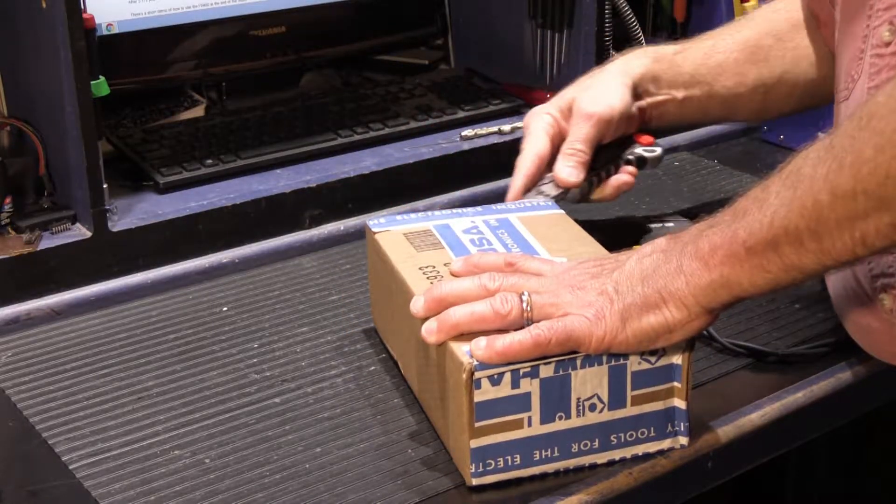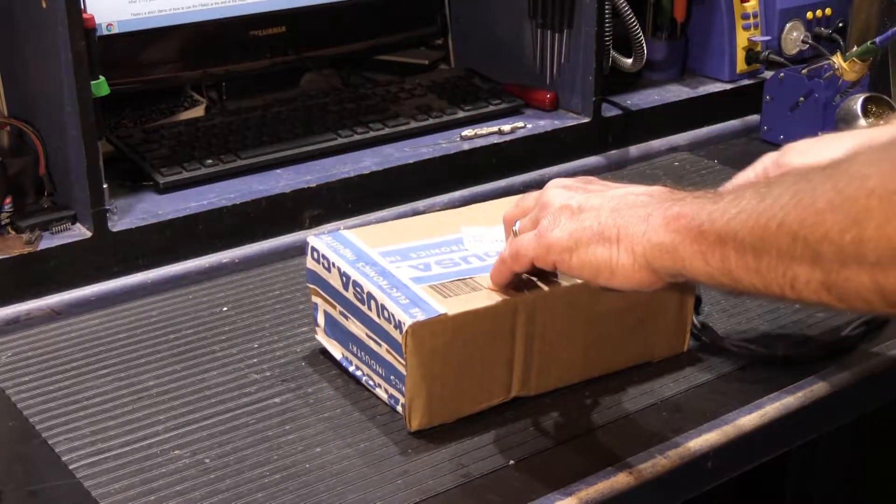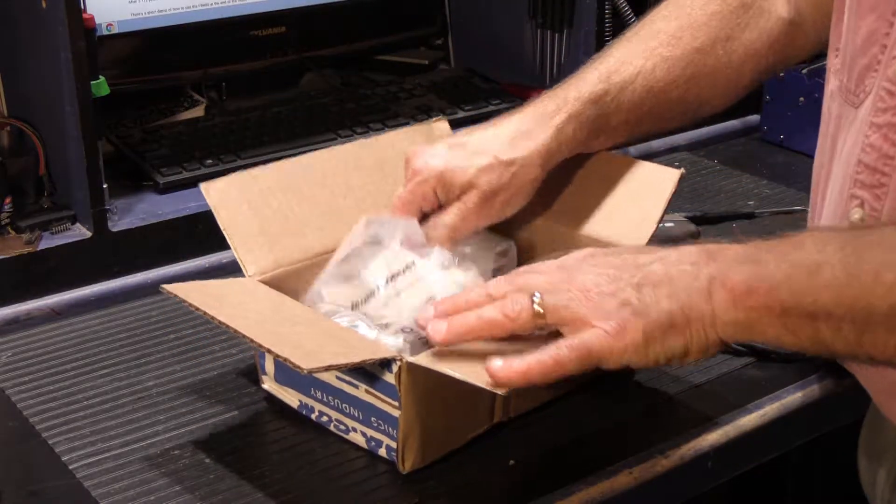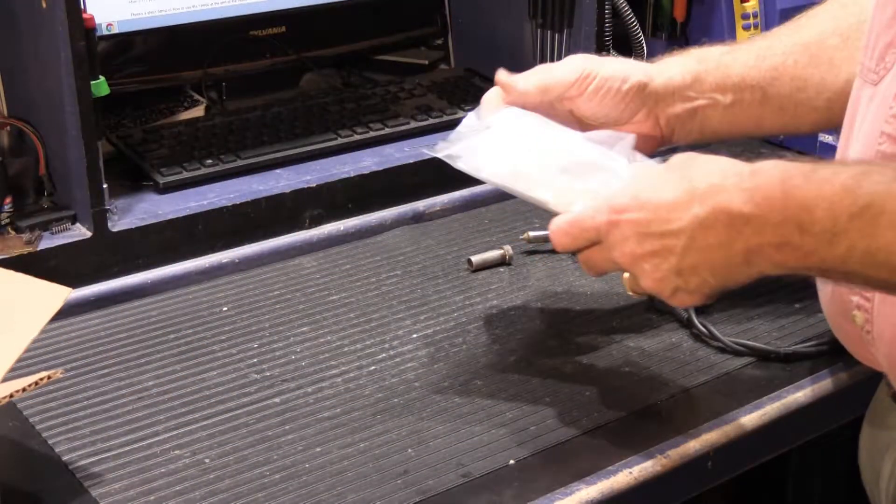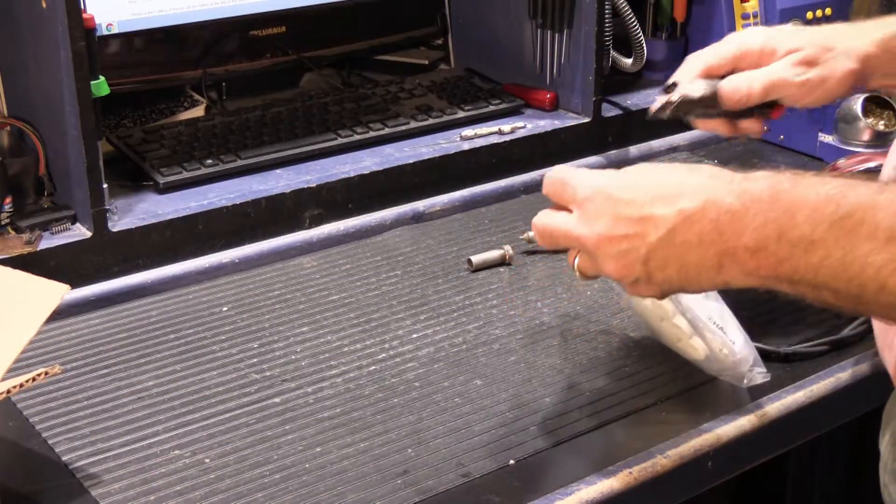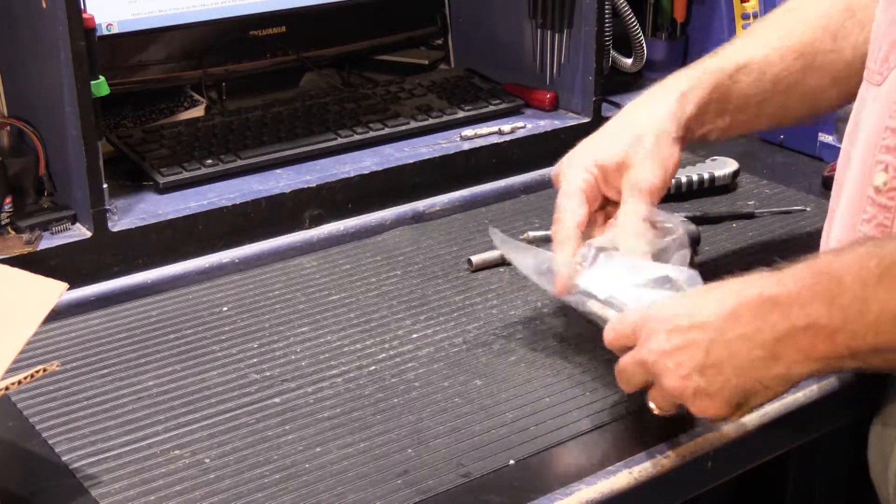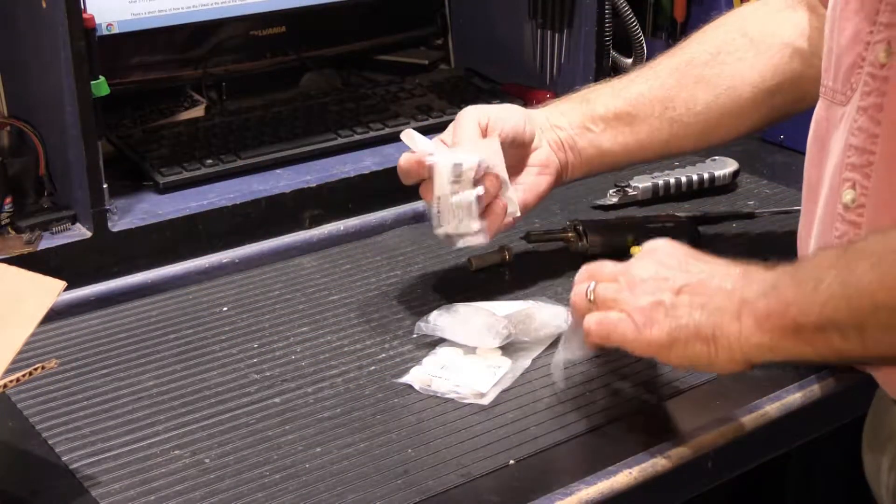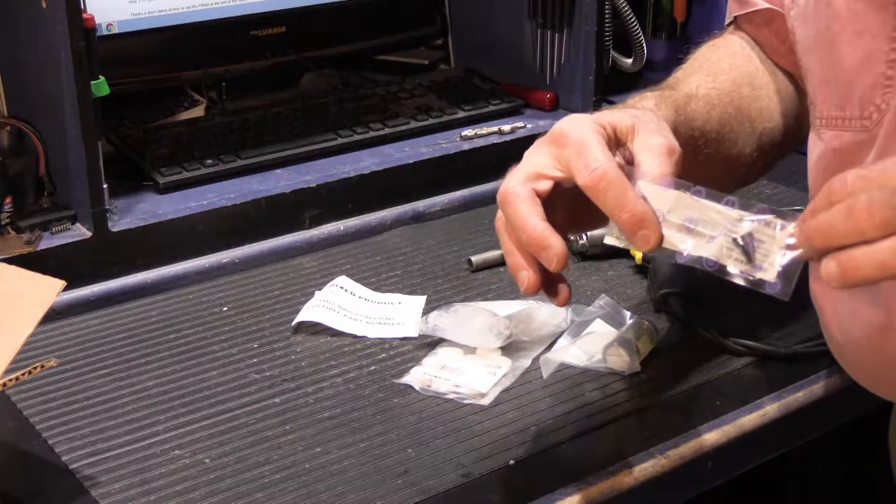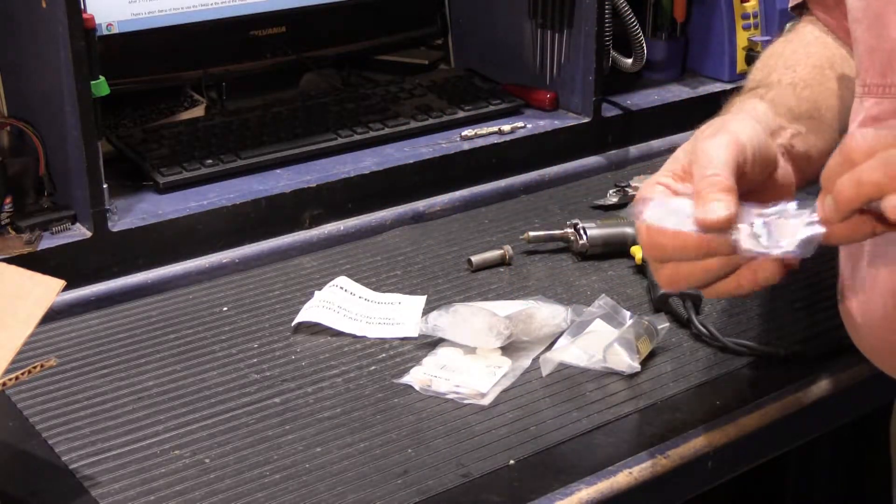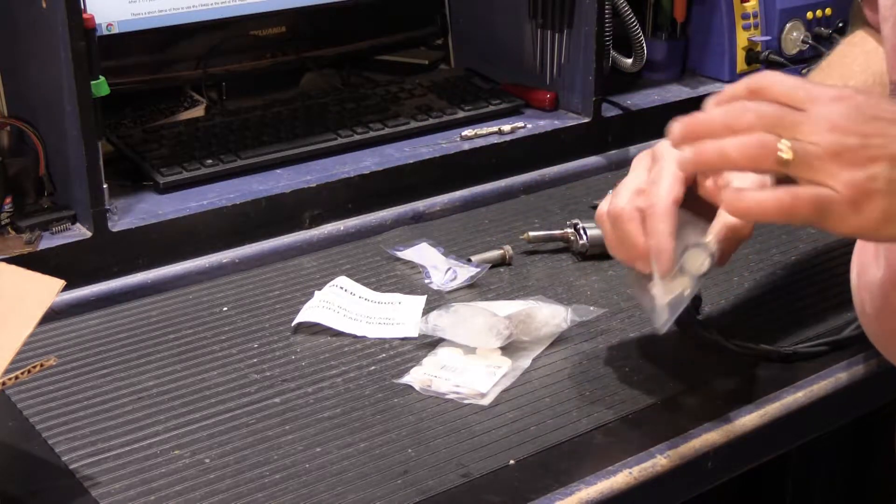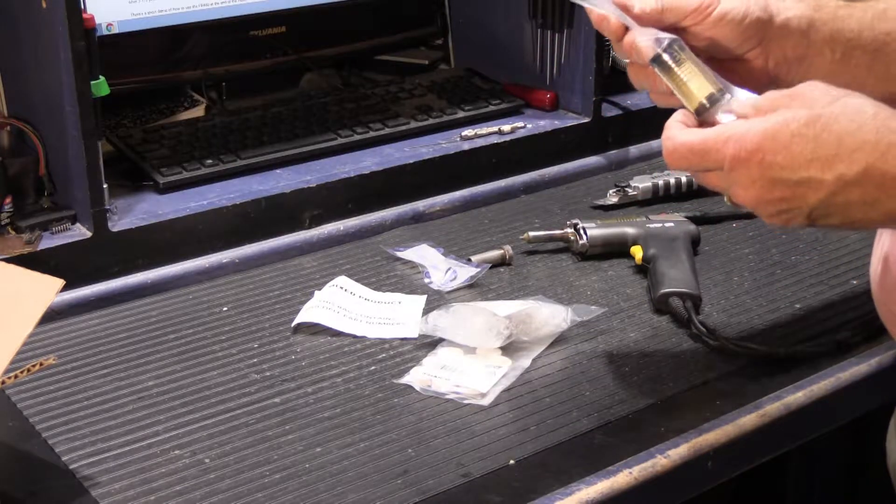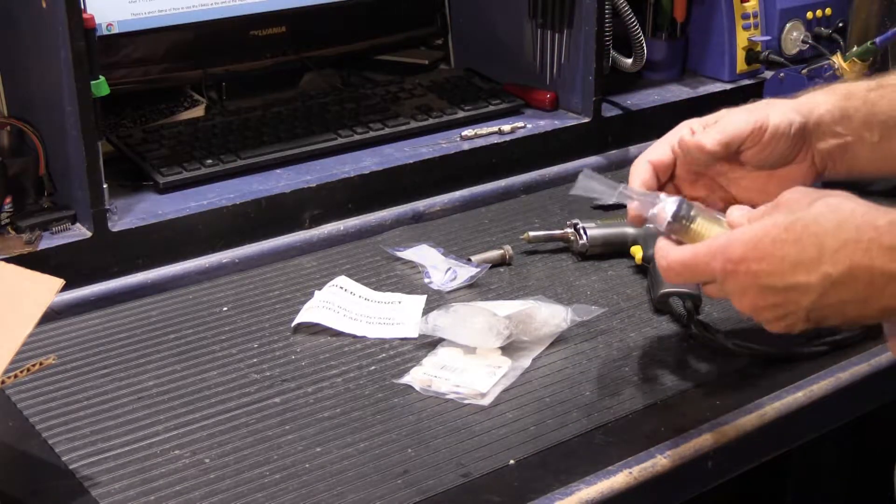I ordered these from Hakko directly. The box is mostly empty, but we have some general purpose stuff here. We have a new tip because whenever I order parts, I always order extra tips—you should always have more than one. I ordered a new receptacle that has a different part number than the original one and said it was improved.